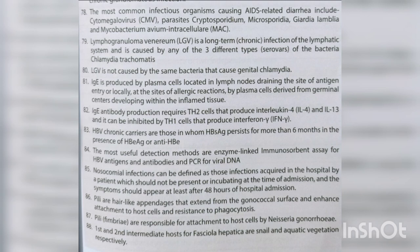LGV is not caused by the same bacteria that cause genital chlamydia. IgE is produced by plasma cells located in lymph nodes draining the site of antigen entry or locally at sites of allergic reactions. IgE antibody production requires Th2 cells producing interleukin-4 and interleukin-13, and can be initiated by Th1 cells producing interferon gamma.